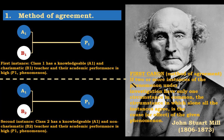That corresponds to the first canon: if two or more instances of the phenomenon under investigation have only one circumstance in common — A1 is the circumstance in common in these two instances, but P2 is not the same. What Mill says is that the circumstance in which alone all these instances agree, which is A1, is the cause or the effect of the given phenomenon — it's the cause or the effect of P1.